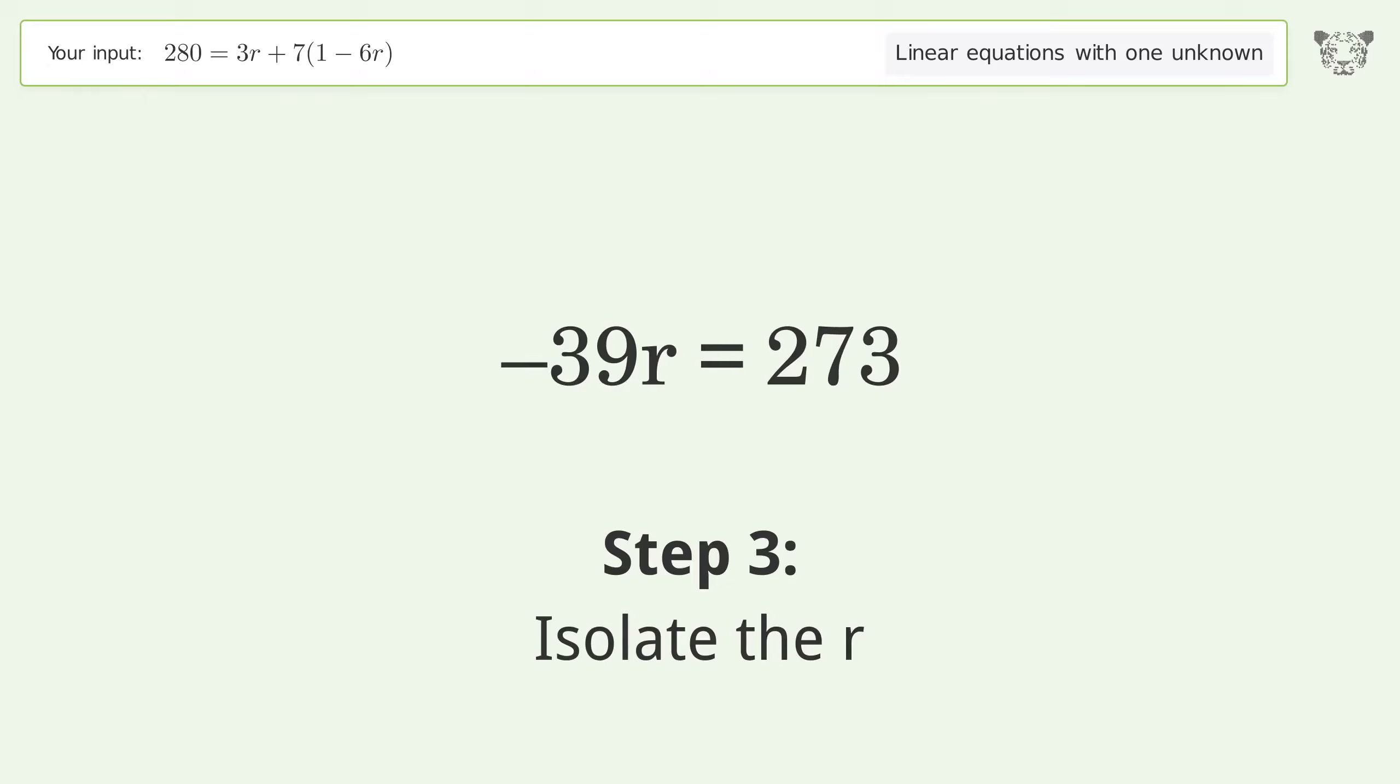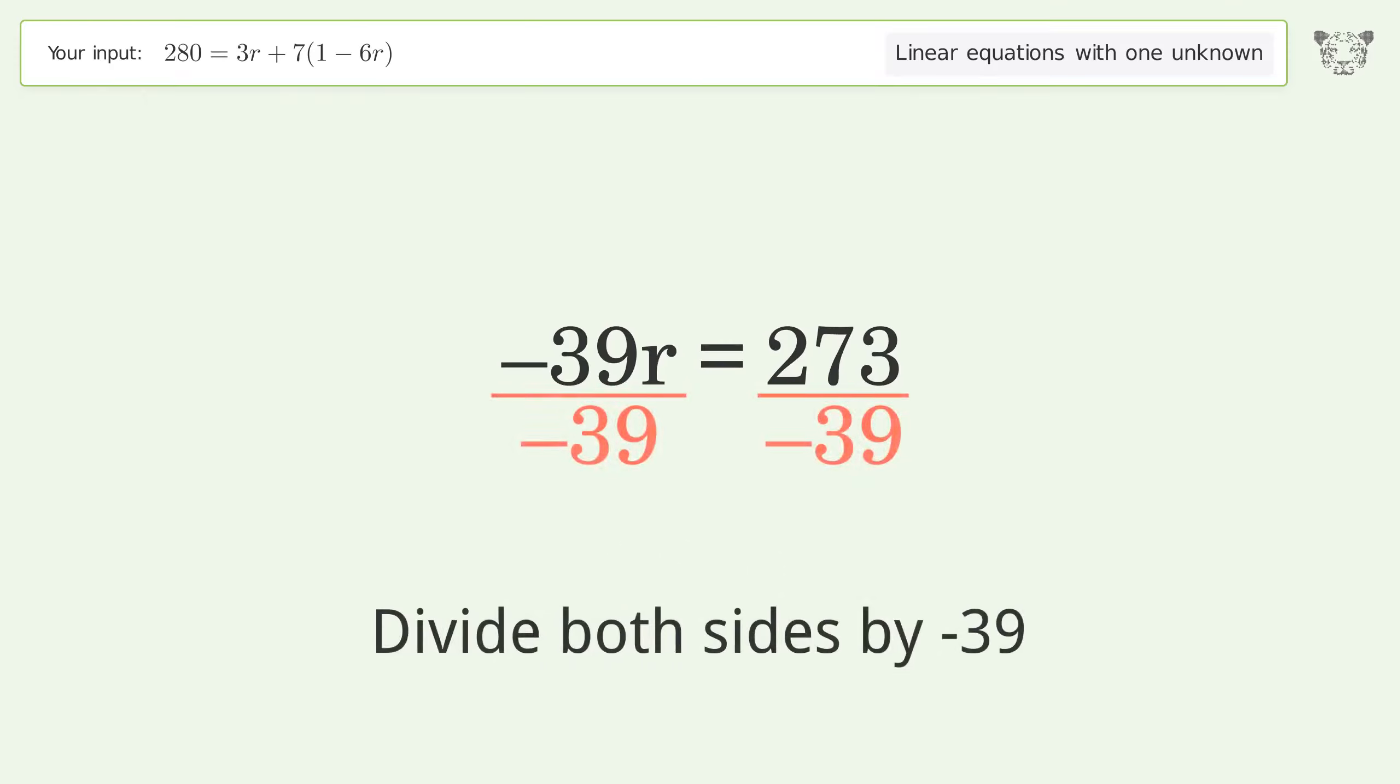Isolate the r. Divide both sides by negative 39. Cancel out the negatives.